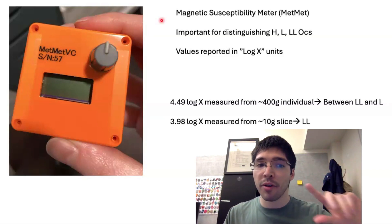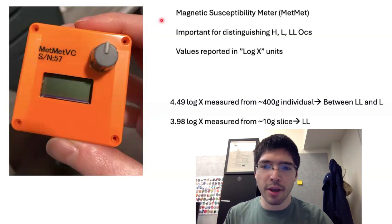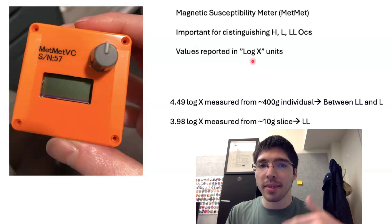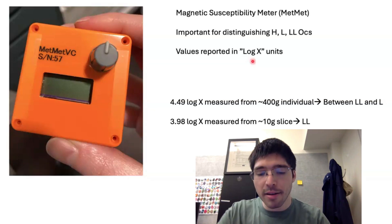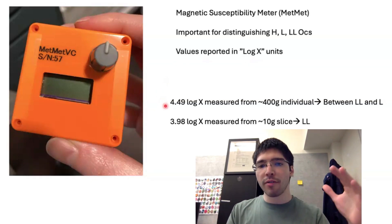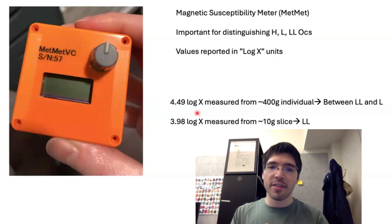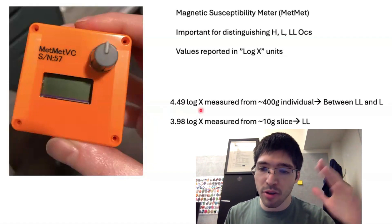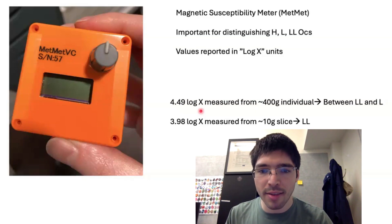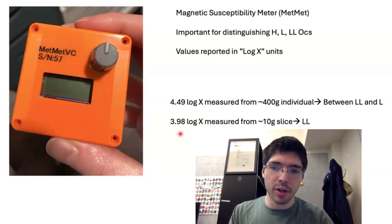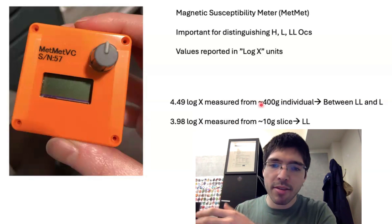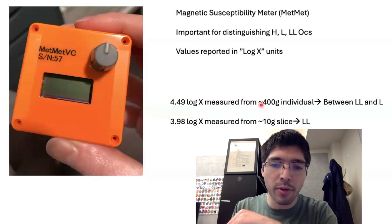They're just reported on the Meteoritical Bulletin website in what are called log X units. Don't ask me what those are. I don't really study magnetic susceptibility, but this is how they're separated. Pat measured a log X value from a large individual, about 400 grams, of about 4.49. For reference, this is between LL's and L's, so it doesn't tell you too much about it in terms of whether it's L or LL. It's just somewhere in between. I measured it on a small 10 gram slice and I got 3.98. So we actually got slightly different values, which is interesting. From what I got, mine fit in the LL field, but the fact that he had a very large individual and measured many different points, that value also should be a relatively good value.